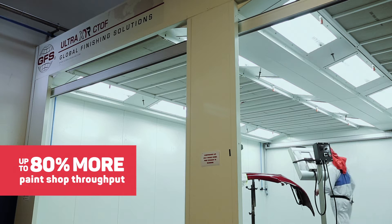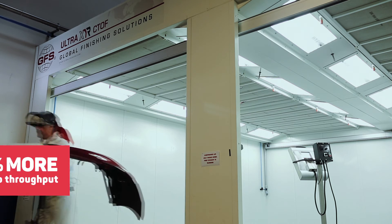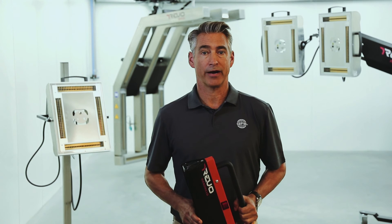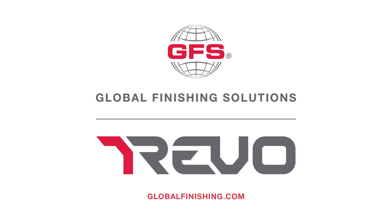Plus, they deliver up to 80% more paint shop throughput. Revo accelerated curing systems from Global Finishing Solutions. Faster repairs, better results. For more information, visit GlobalFinishing.com.